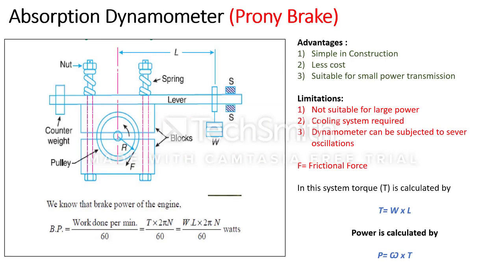Here is the absorption type dynamometer, which is also known as the prony brake dynamometer. The name 'prony brake' comes from the designer of this dynamometer, which is used to measure torque and calculate the frictional power or brake power. That's why the name is prony brake absorption dynamometer. This figure shows the prony brake dynamometer.